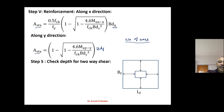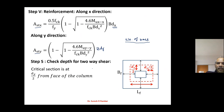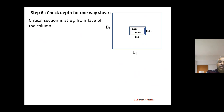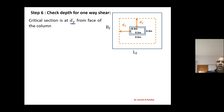Next, check depth for two-way shear and one-way shear. For two-way shear, the critical section is at a distance of DY/2 from the face of the column — we calculate the capacity of the footing at this section and it should satisfy our requirement. For one-way shear, the critical section is at a distance of DY from the face of the column. So: one-way shear critical section at DY from face of column, two-way shear at DY/2 from face of column.